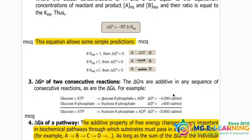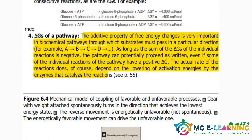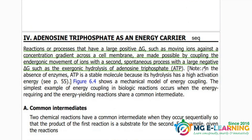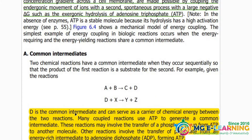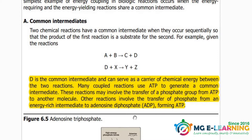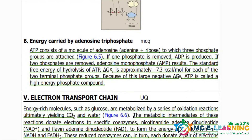Delta Gs of a pathway — you just have to read it for conceptual purposes. ATP as an energy carrier: you have to know about ATP; it is important for CQ point of view. ATP is the common intermediate — it is the receptor and the donator of phosphate. Energy carried by ATP is important for MCQ point of view.